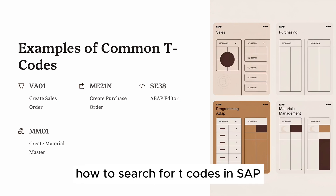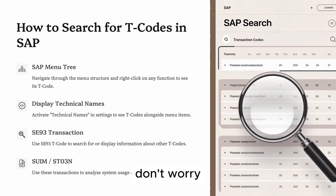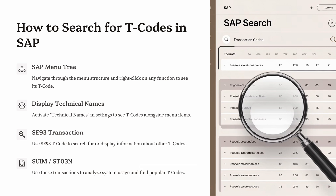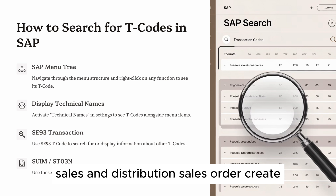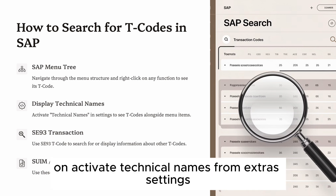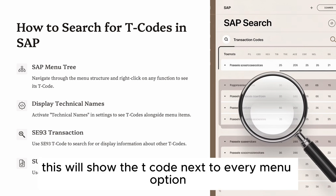Part 4: How to search for T codes in SAP. If you don't remember a T code, don't worry — there are multiple ways to find what you need. Method 1: use the SAP menu tree and navigate through Logistics > Sales and Distribution > Sales Order > Create; you'll eventually land at VA01. Method 2: activate technical names from Extras > Settings > Display Technical Names — this shows the T code next to every menu option.